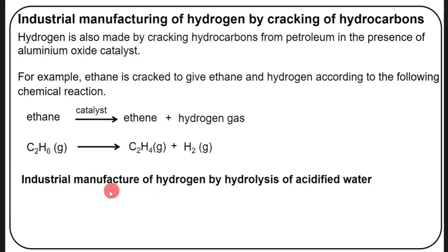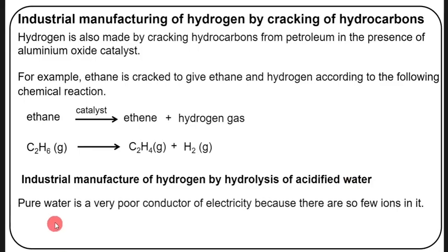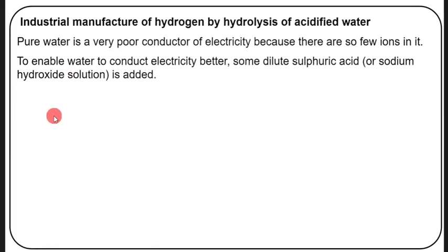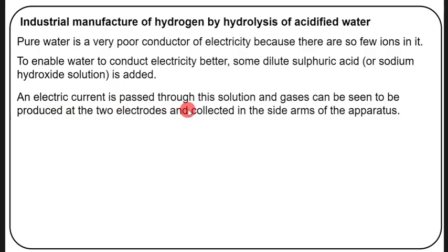Now let's look at the industrial manufacture of hydrogen by electrolysis of acidified water. Pure water is a very poor conductor of electricity because there are so few ions in it. To enable water to conduct electricity better, some dilute sulfuric acid or sodium hydroxide solution is added. An electric current is then passed through the solution and gases are produced at the two electrodes and collected in the side arms of the apparatus.